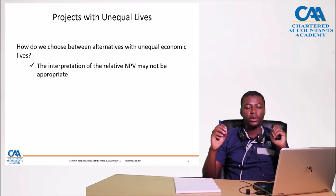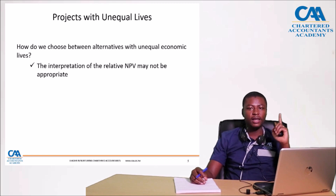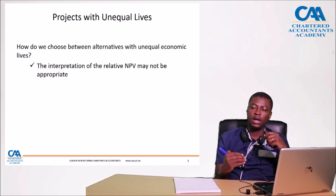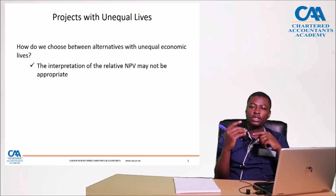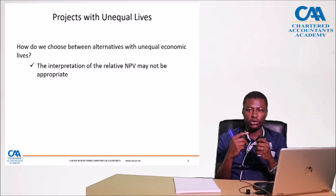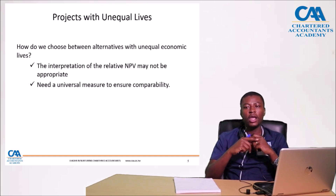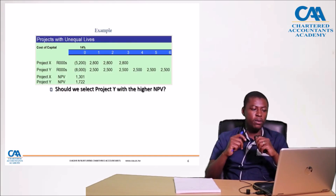So how do we choose? We need to look at relative NPV. Because if you look at NPV, it discounts the future cash flows differently. So for projects with different economic lives, their net present values are distorted. NPV alone will not be adequate to evaluate these projects. We need a universal measure to ensure comparability.